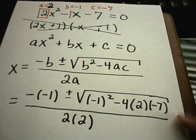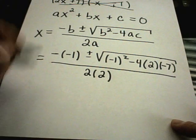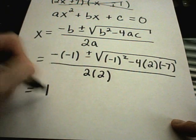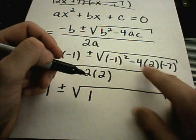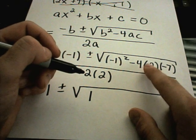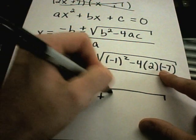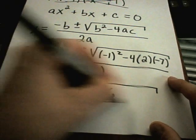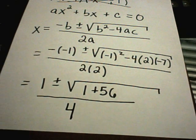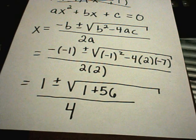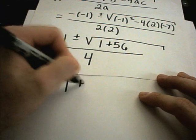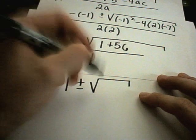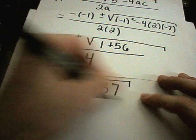So now I have to simplify all of this stuff down. Negative negative 1 is positive 1. Plus or minus the square root. Underneath I'm going to get a 1. Then I have negative 4 times 2. That's negative 8. Negative 8 times negative 7 is positive 56. Over 2 times 2, which is 4. From here I just keep simplifying. So I'm going to get 1 plus or minus the square root of 1 plus 56, which is 57, over 4.